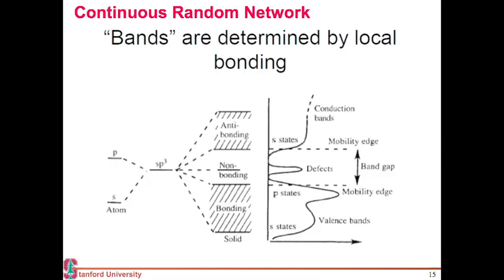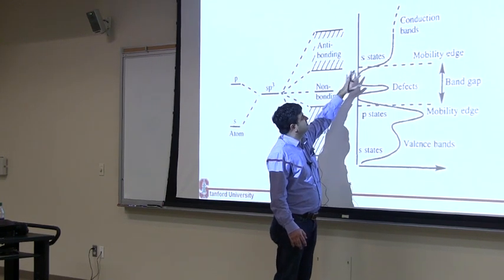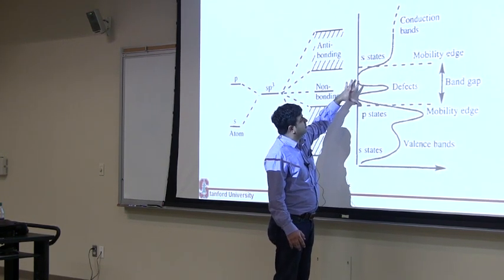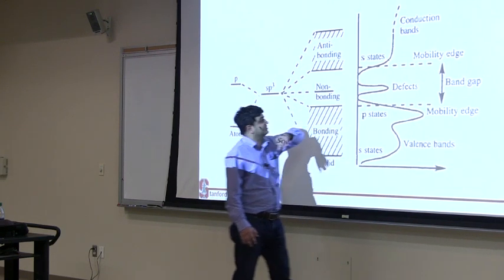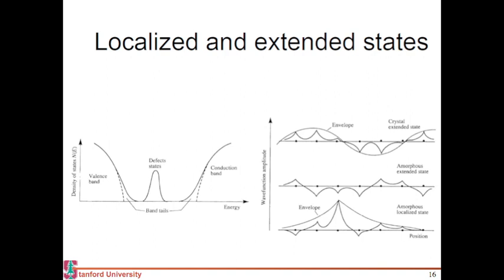What it leads to is you will have these—I'm describing silicon here—SP3 hybridization, and you still get these bonding and antibonding states which give you your conduction and valence band. But because of that random order, you'll get these localized states beyond your band gap, and you'll also get these defects in your band gap. So this is another way to understand the same thing.